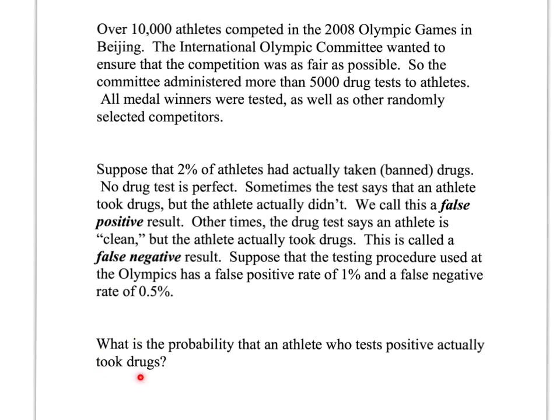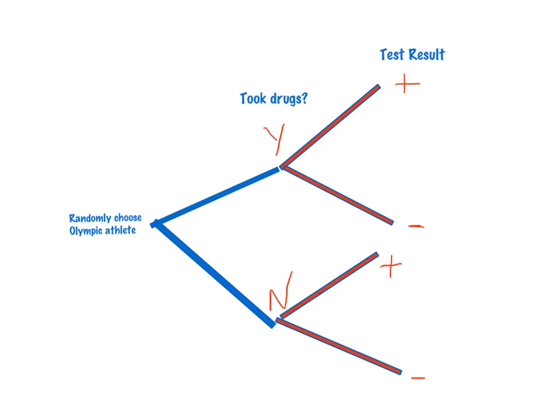I have our tree diagram set up here already. What we want to do is start with the idea of the probability that if I picked a random athlete, they have taken drugs. We'll branch off from that idea. The condition of this test, false positives and false negatives, is based on whether or not they actually took the drugs. We're told that 2% actually take drugs, so I'll list this here as 0.02.